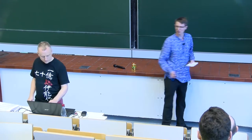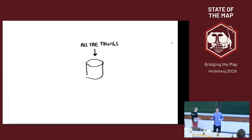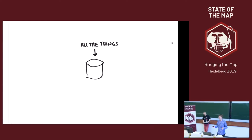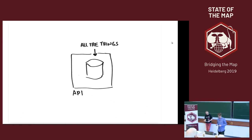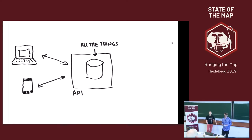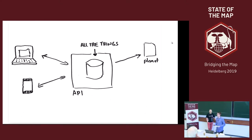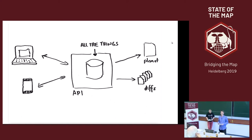It's actually pretty simple if you think about it. We have a central database that stores all the things and also all the history. Then there is an API around this database so you can actually talk to it. We have some editors out in the wild that are able to communicate with this API to add and retrieve data. And if you want all the data for yourself without going to the API every time, you can get the planet — a representation of everything, including all history if you want. There's also a diffing mechanism so you can get minutely updates without having to download the entire planet every time.